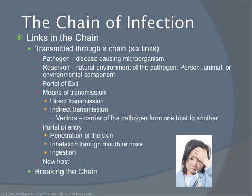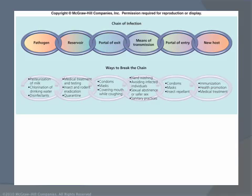The links in the chain of infection — the six links we'll discuss. On the next slide there's a diagram that will show you the six links and how to break that chain, starting with the pathogen, which is your disease-causing microorganism; the reservoir, which is you, an animal, or an environmental component; the portal of exit, which could be a sneeze or an ejaculation; means of transmission; the portals of entry into the skin, through your nose or mouth, into your eye; and then the new host and how to break the chain.